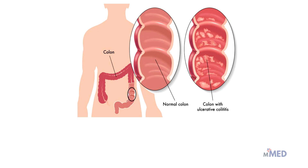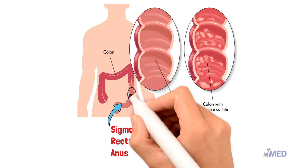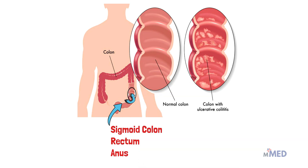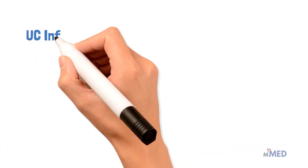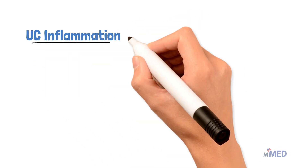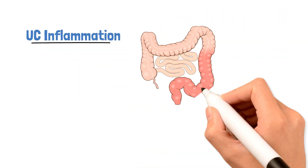Ulcerative colitis only affects the sigmoid colon, the rectum, and the anus. In fact, ulcerative colitis almost always involves the rectum. It spreads proximally from the rectum in a continuous pattern, spreading up the colon.